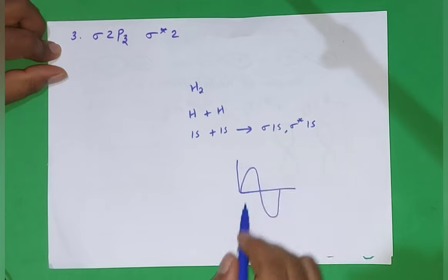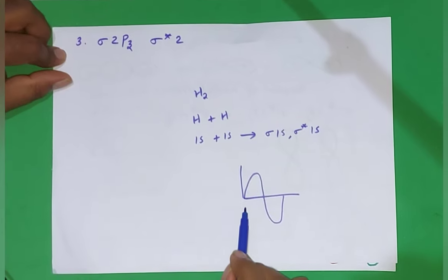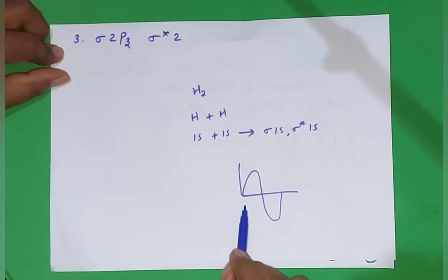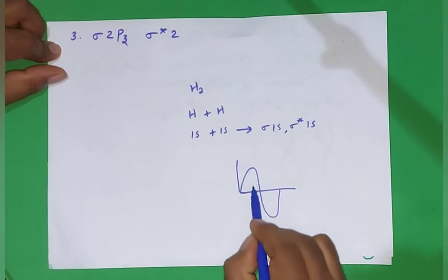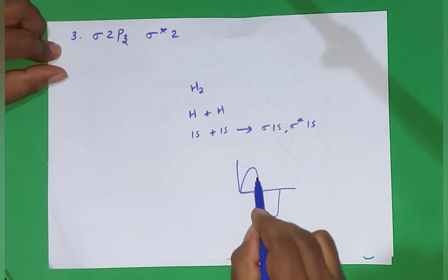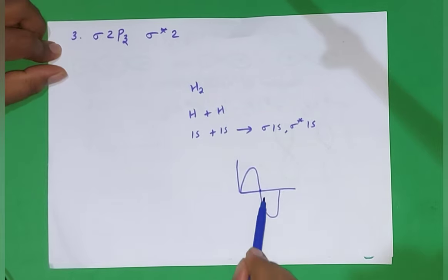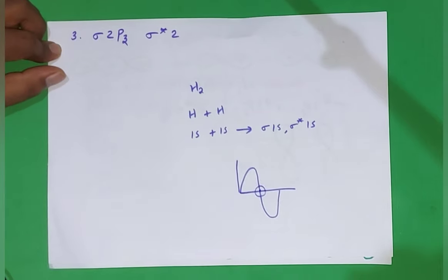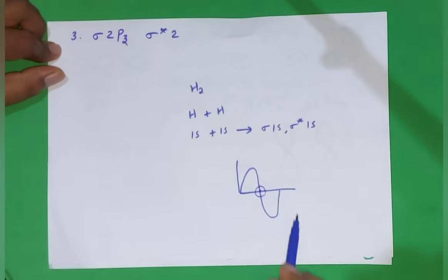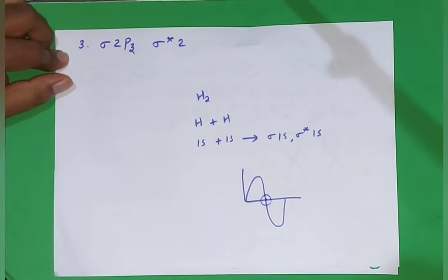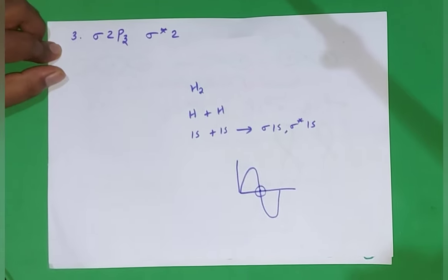It is a probability diagram meaning the probability to find the electron. The probability is increasing, then decreasing, then there is a node. A node means there is no possibility of finding an electron. Then again increasing, again decreasing. A negative value is not a problem.